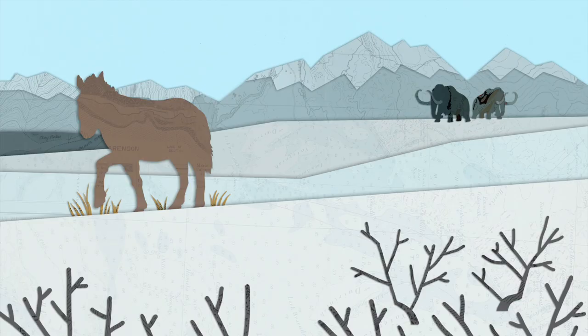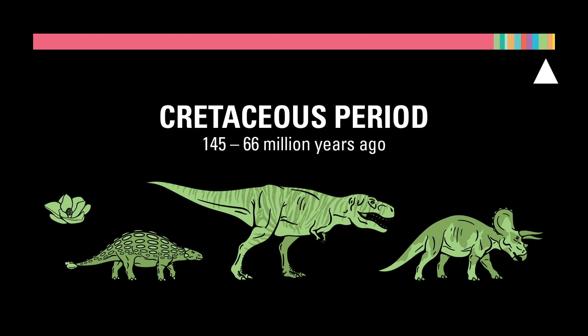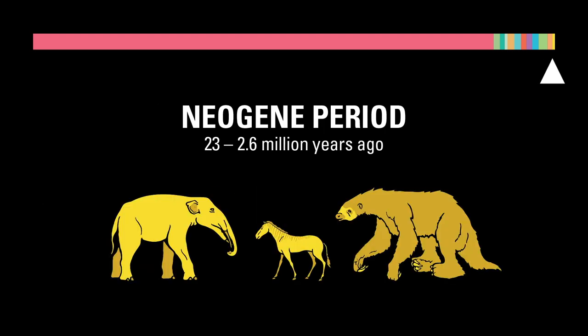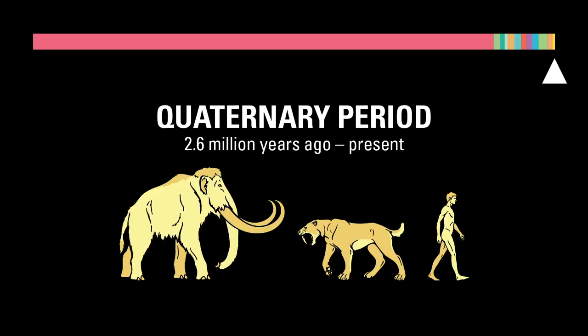Another famous prehistoric time is the Pleistocene Epoch of the Quaternary Period — this was the Ice Age, with its mammoths and saber-toothed cats. What isn't always made clear, though, is that 63 million years went by between the extinction of the dinosaurs at the end of the Cretaceous and the beginning of the Pleistocene, and plenty of evolution went on in the space in between.